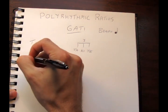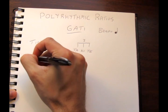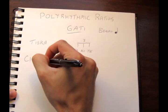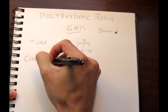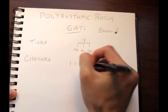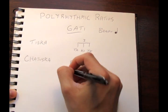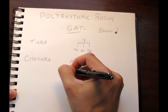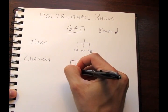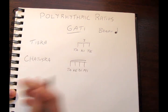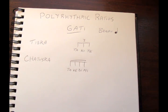The next one is called chatusra. This is the four-tuplet for sixteenth notes, and we are going to be using the syllables ta-ke-di-mi. Ta-ke-di-mi, ta-ke-di-mi, ta-ke-di-mi.